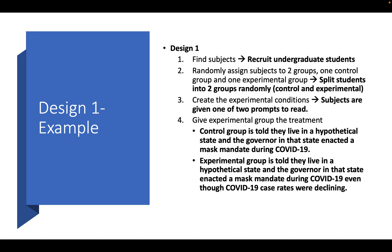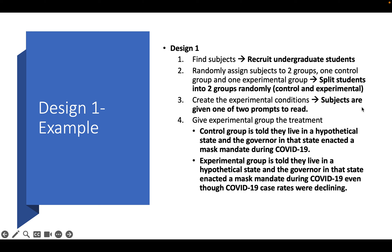Creating experimental conditions: subjects are given one of two prompts to read. The control group is told that they live in a hypothetical state and the governor enacted a mask mandate during COVID-19. The experimental group is told the same, but with the addition that the governor enacted the mask mandate even though COVID-19 case rates were declining. That added information — even though COVID-19 case rates were declining — is the treatment.